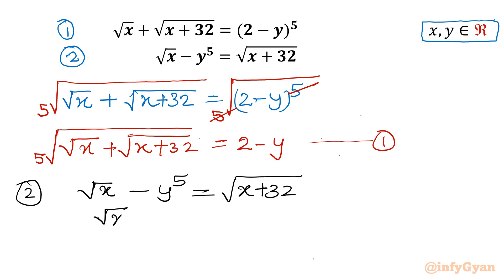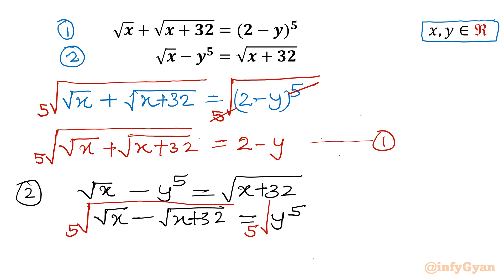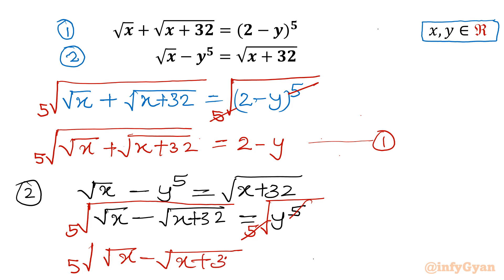Rearranging equation 2: square root x minus square root of x plus 32, equal to y power 5. Taking the fifth root of both sides and canceling fifth root with power 5, we get: fifth root of square root x minus square root of x plus 32, equal to y. This is equation number 2.